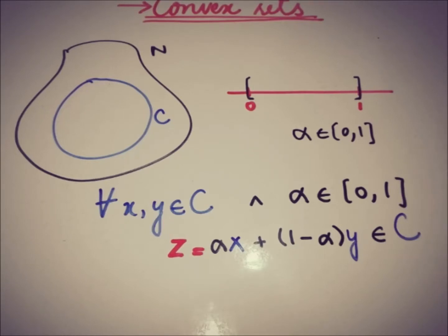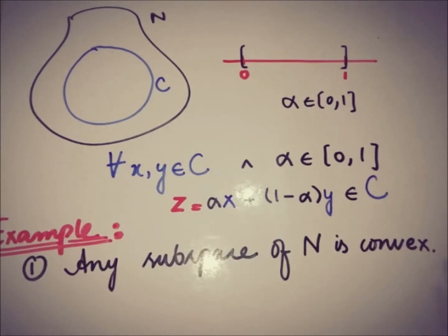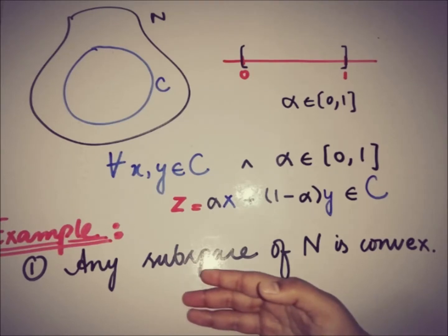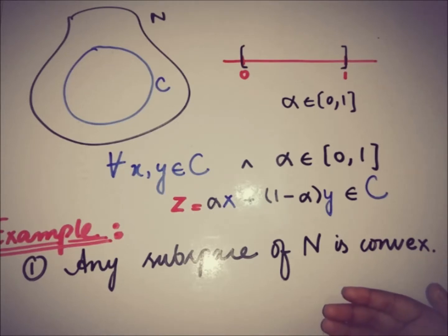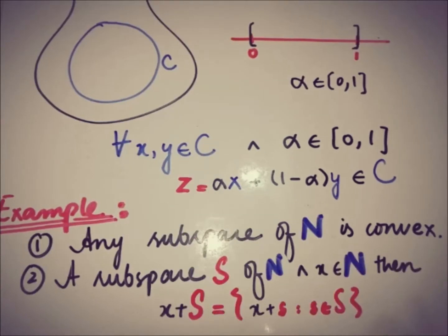Now moving toward its examples. The very first example of a convex set is that any subspace of a linear space is convex. The important point here is that we are not talking about any subset of a linear space N, but we are talking about any subspace of a linear space N. So it is a very common example that any subspace of a linear space is convex.